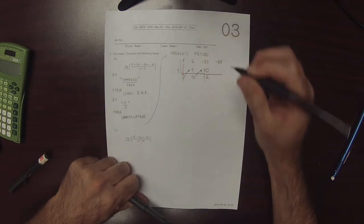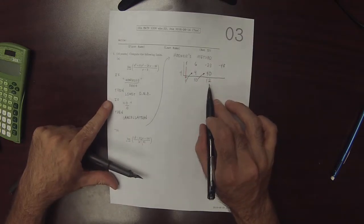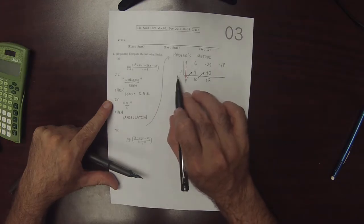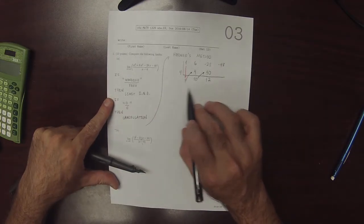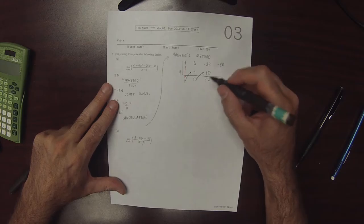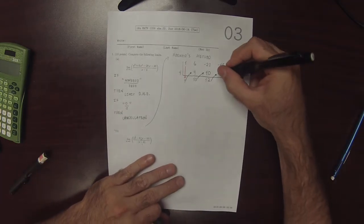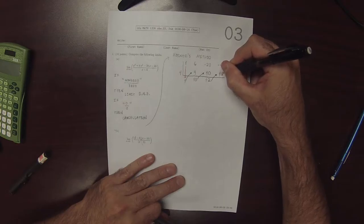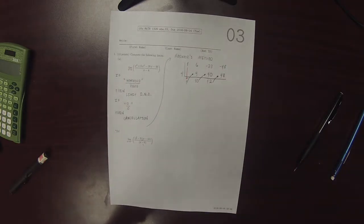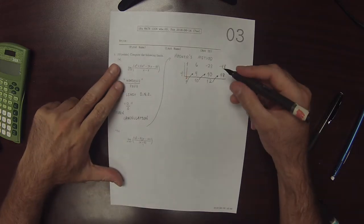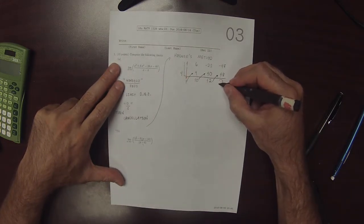So 12 made it outside of the house. But now 12 wants to get back in. And 4 is guarding the door. So when 12 comes back in, it gets multiplied by 4 to become 48. And then negative 48 plus 48 is 0. And we're so happy about this. And we're going to make it a smiley face.